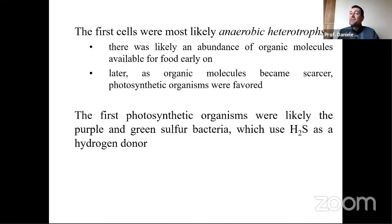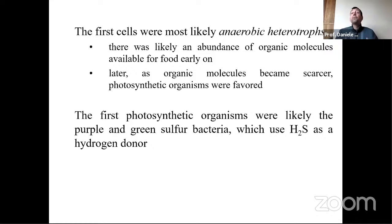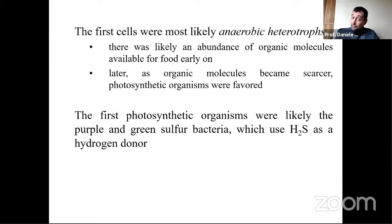Being anaerobic, these bacteria lived in the absence of oxygen. Being heterotrophs, they did not make their food by themselves but used the abundance of organic molecules available in the primordial soup to grow and develop. When the organic molecules in the primordial soup became scarce, photosynthetic autotrophic organisms took part. The first autotrophic photosynthetic organisms were reasonably the purple and green sulfur bacteria, which used hydrogen sulfide as a hydrogen donor and therefore did not produce oxygen.